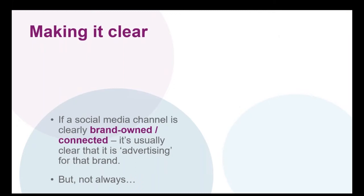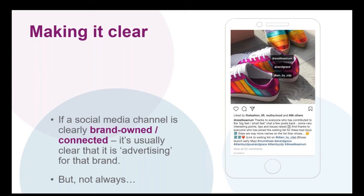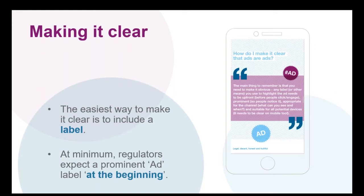So how do you make it clear? If the social media channel is clearly brand-owned or there's a very clear connection, it's usually clear that it's advertising for that brand — but this is always considered on a case-by-case basis. Marnie Simpson was promoting her own range of contact lenses — it was her own product, but the ASA decided that there wasn't enough in the content or context to make clear that this was advertising. Similarly, Zoe De Passa's Instagram post included images of products that were part of a brand collaboration, but consumers had to click 'more' to see the text indicating it was advertising — so it was not obviously identifiable as a marketing communication prior to engagement.